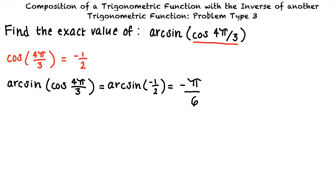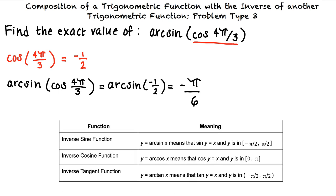This results in negative π/6. Why does the inverse sine of negative 1/2 result in negative π/6? To answer that, let's look at some facts about inverse trigonometric functions. The inverse sine function means that the sine of y equals x, and y is in the closed set of negative π/2 and π/2. The inverse cosine function means that the cosine of y equals x, and y is in the closed set of 0 and π.